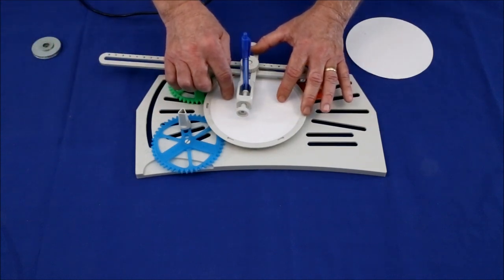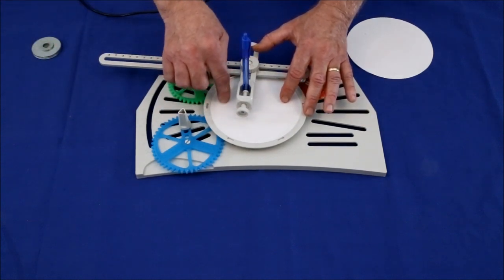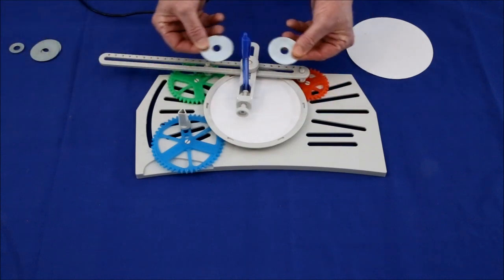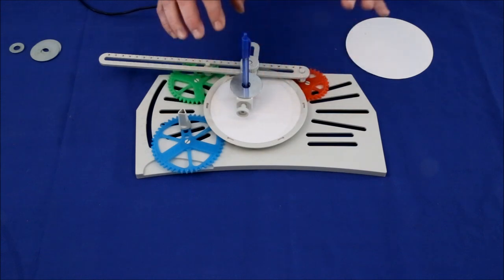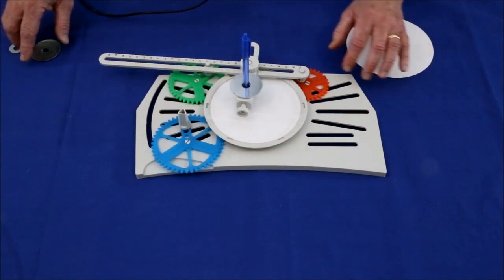Sometimes the pen doesn't always make good contact with the paper. I found that adding two large washers like this gives it just enough weight so you get a better trace. Sometimes, also,